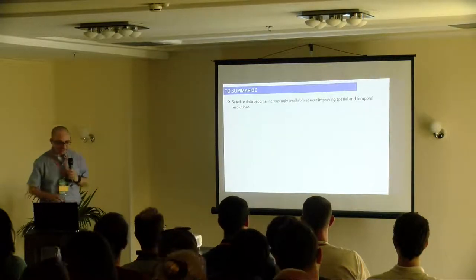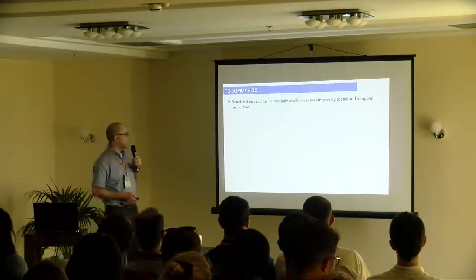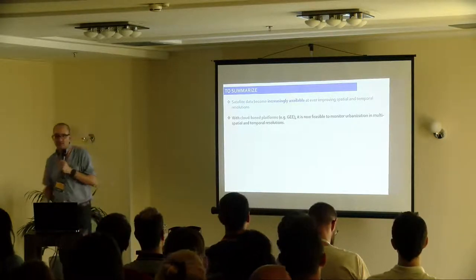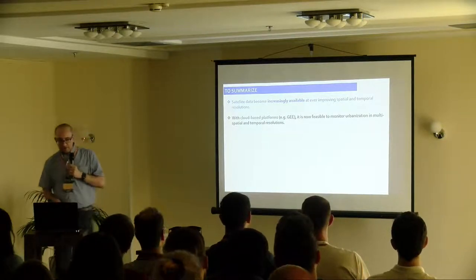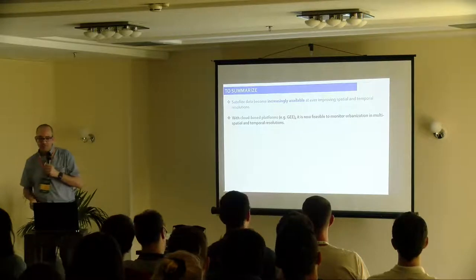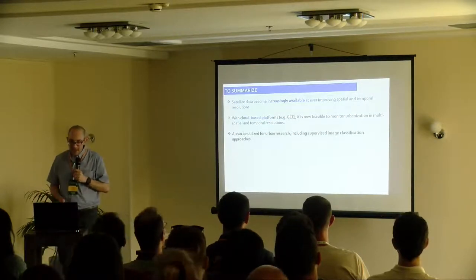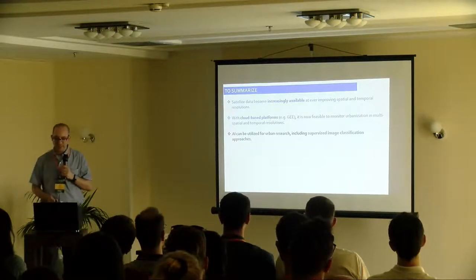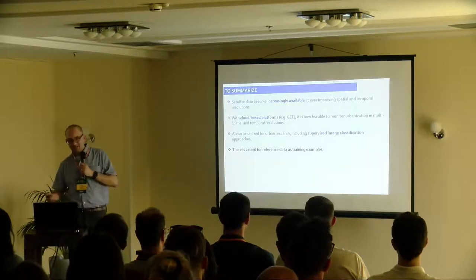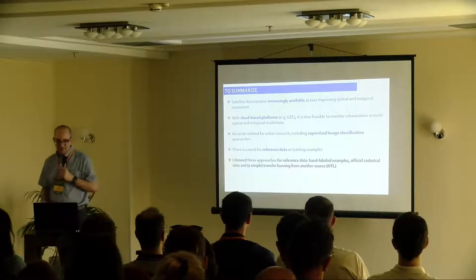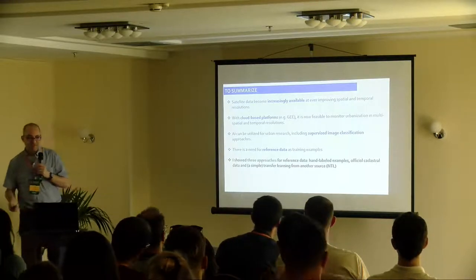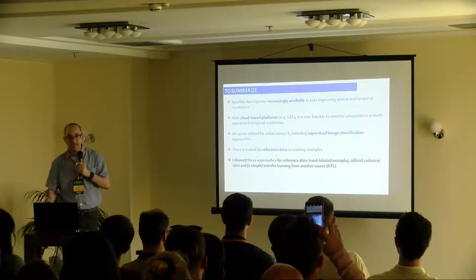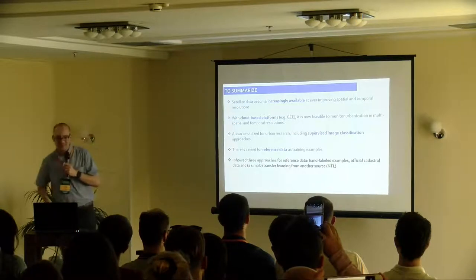To summarize: satellite data are becoming increasingly available at ever-improving spatial and temporal resolution — we saw Landsat, Sentinel-1, Sentinel-2. With cloud-based platforms such as Google Earth Engine, it is now possible to monitor urbanization across space and time. AI and machine learning can be utilized for urban research, including supervised image classification, but the trick is always how to get labeled examples. I showed you three approaches: collecting reference data manually, using administrative data as a source, and a basic transfer learning approach using nighttime light data to collect labeled examples.